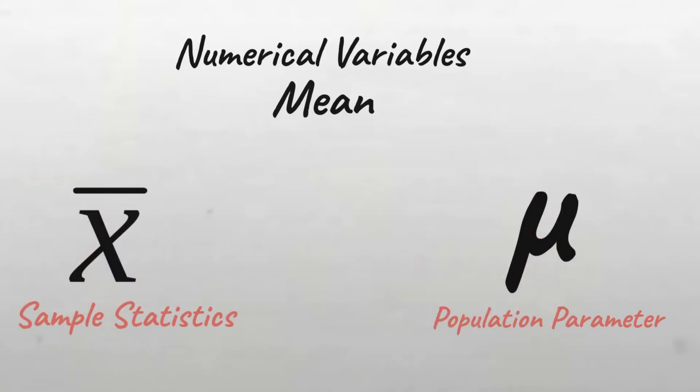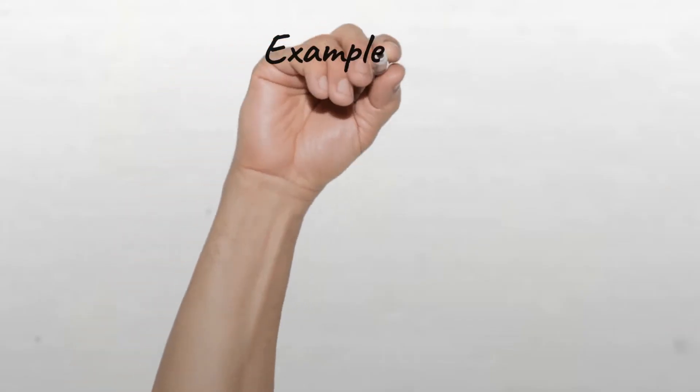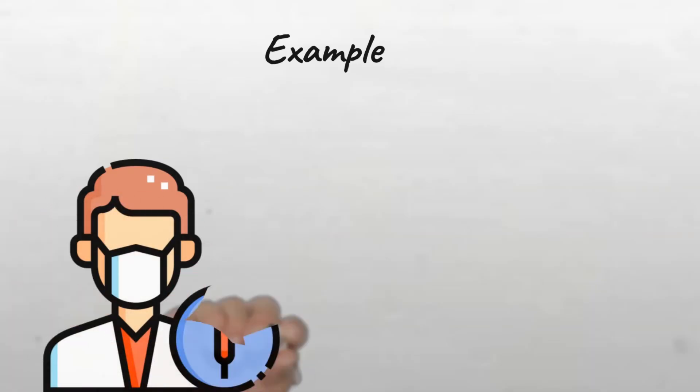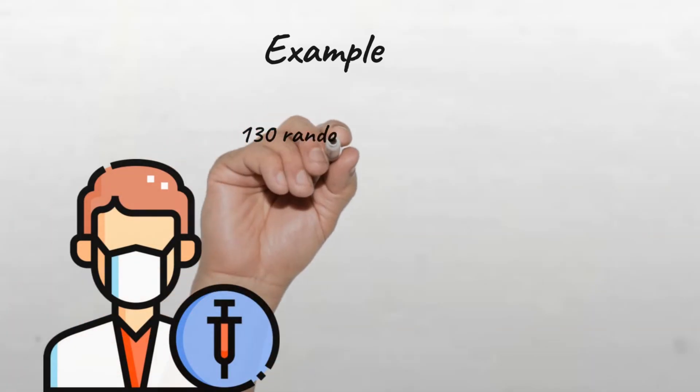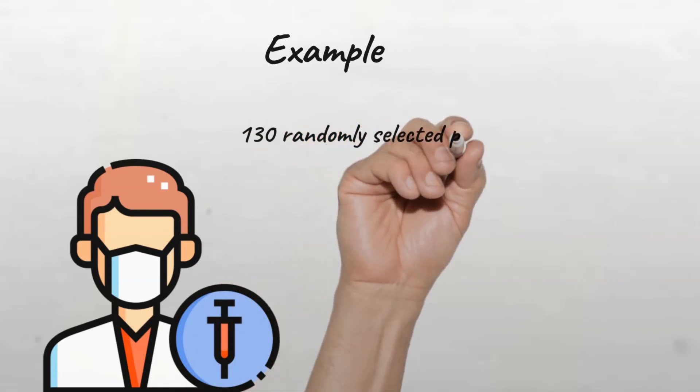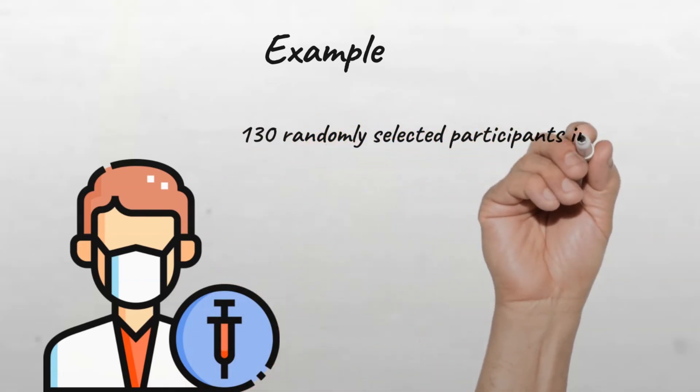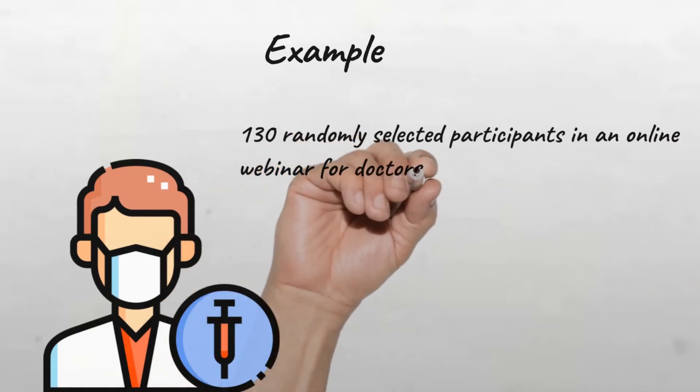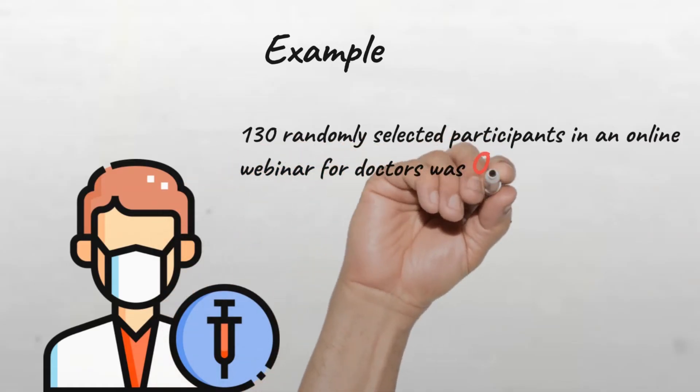Let's look at two examples of results obtained by a research. The proportion of medical doctors that have been fully vaccinated against COVID-19 among 130 randomly selected participants in an online webinar for doctors was 0.45. What do you think the proportion of 0.45 is? A parameter or a statistic?